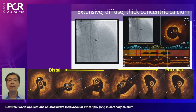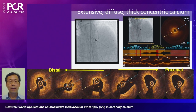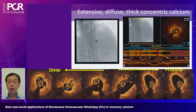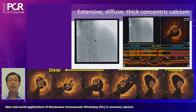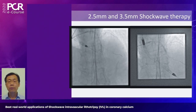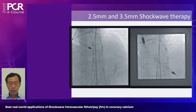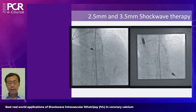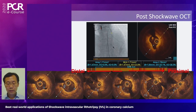We achieved satisfactory flow and then performed OCT, which revealed the typical pattern we see in Asia and Hong Kong: very extensive, diffuse, and very thick concentric calcium with thickness over 1.5mm. The rotablator produced a channel to allow passage of the balloon catheter, but was not sufficient for stenting alone. We therefore used two shockwave balloons — a 2.5mm distally and a 3.5mm more proximally — to crack the calcium and facilitate the stenting procedure.